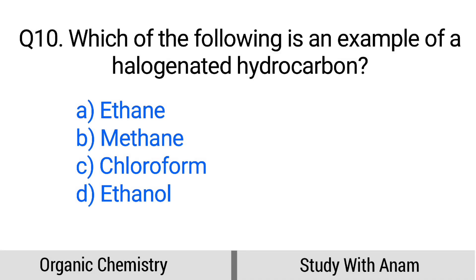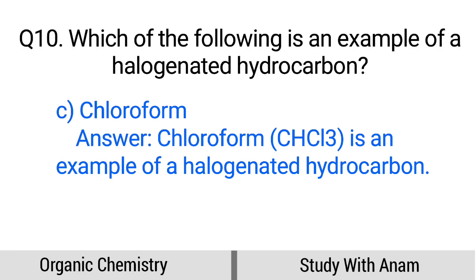Question number 10. Which of the following is an example of a halogenated hydrocarbon? Option A: Ethane, B: Methane, C: Chloroform, D: Ethanol. The correct option is option C, Chloroform. Chloroform (CHCl3) is an example of a halogenated hydrocarbon.